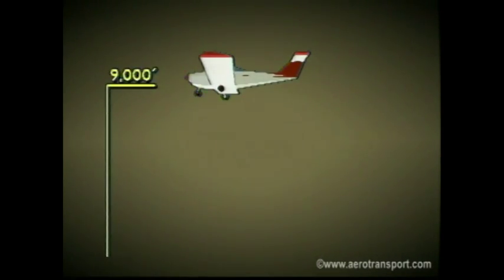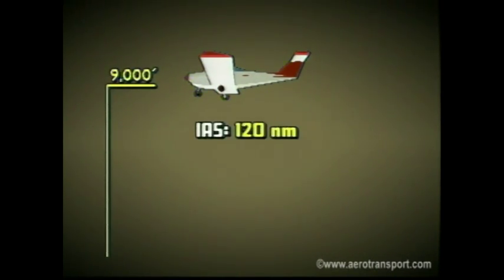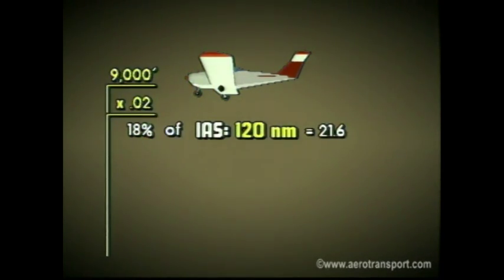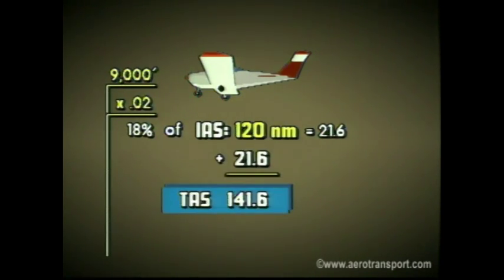For example, you are flying at 9,000 feet with an indicated airspeed of 120 knots. To correct the error, multiply 9,000 by 2%, which equals 18%. Now take 18% of 120 knots, which equals 21.6. Then add this value to the indicated airspeed of 120 knots to arrive at the true airspeed of 141.6 knots.